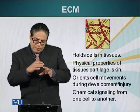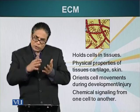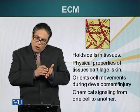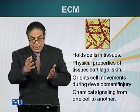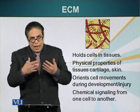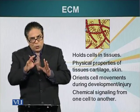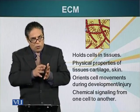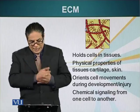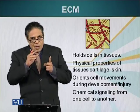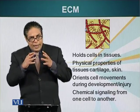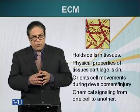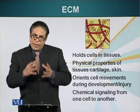Extracellular material can also serve as a road map or road along which cells can crawl. This is important during embryogenesis — cells need to go to a specific place and they use extracellular material to crawl on and reach their destination. Not only do extracellular materials play an important structural role, they also have a very important role in cell signaling.